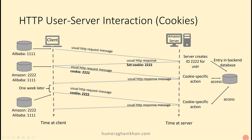Through this figure we will understand the cookies operation. This is the client computer, and progress in time is shown through this line. This is the amazon.com server website, and progress in time is shown through this line. At some point, this client visited alibaba.com website and that website put its cookie 1111 on the client.